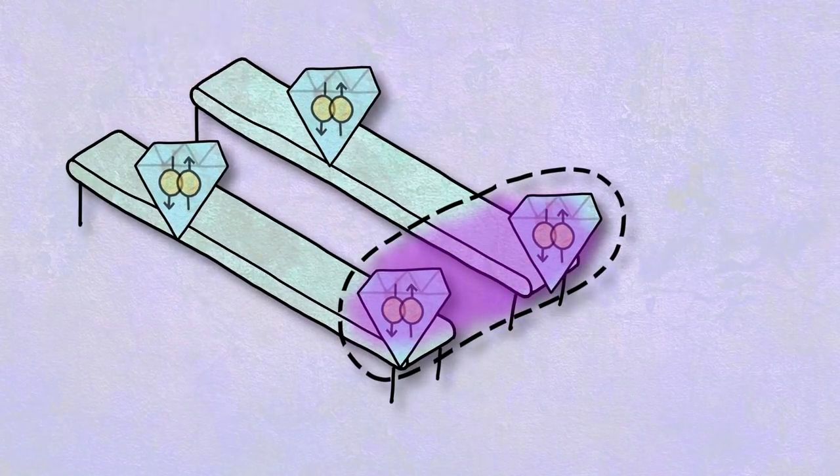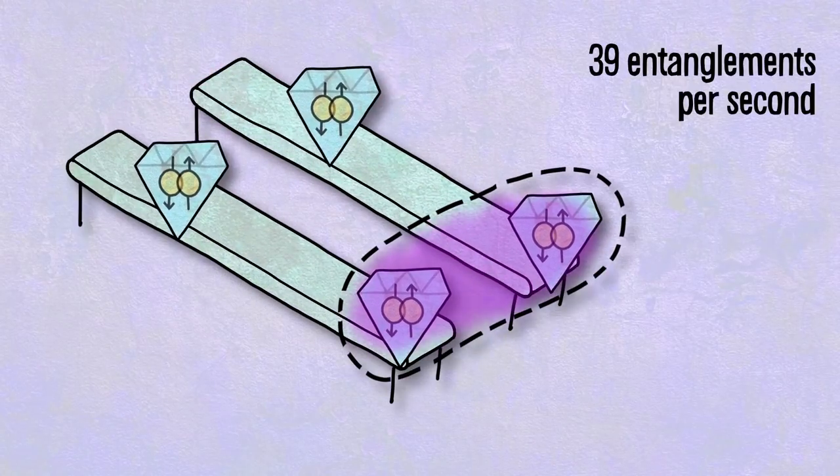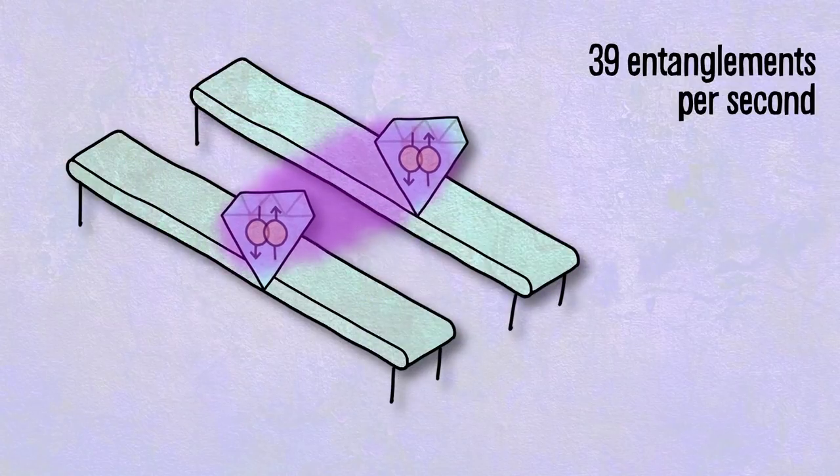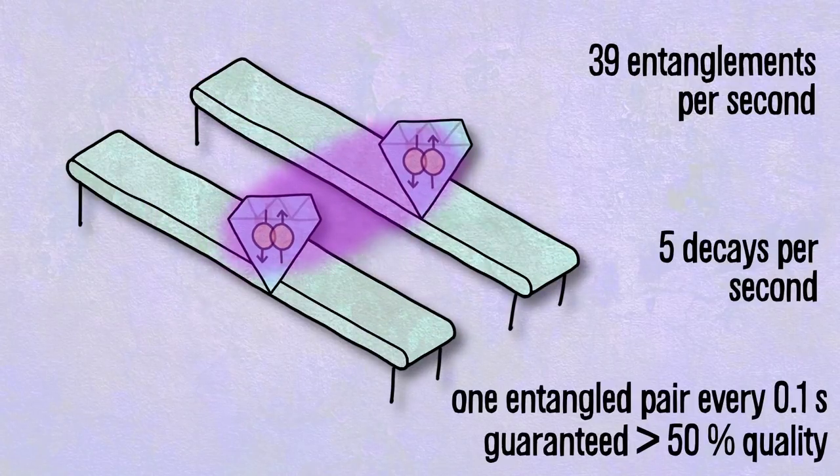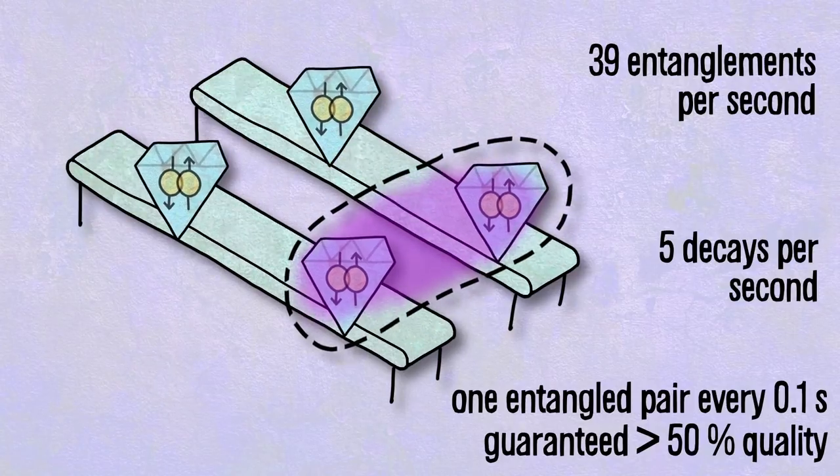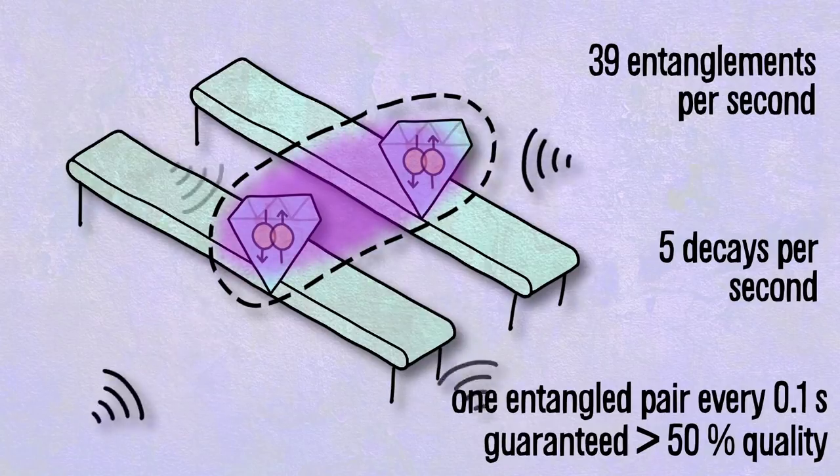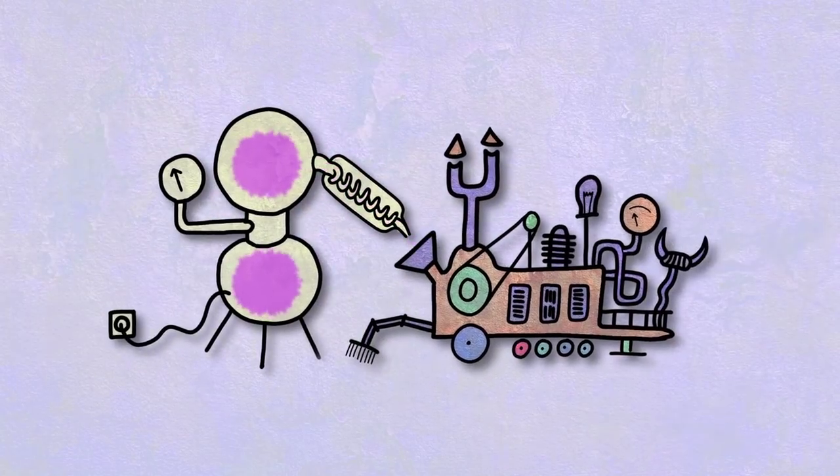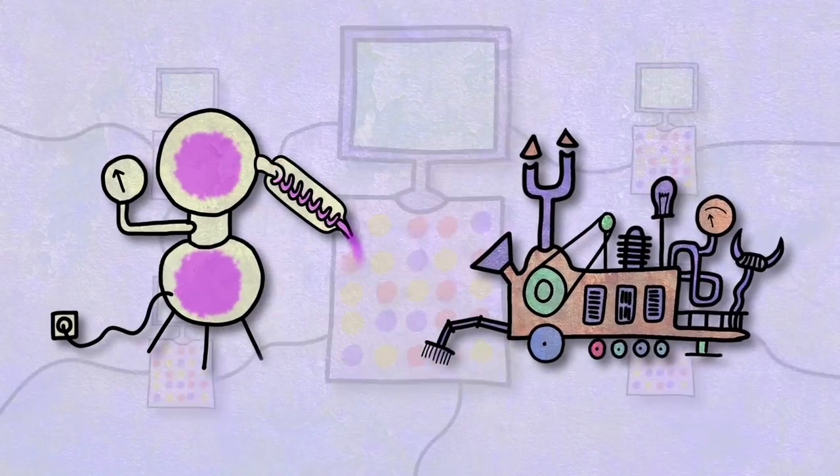Our best setup, after some fiddling, generates 39 entangled pairs per second, which will only decay five times per second. The resulting assembly line produces an entangled state at clockwork timing of ten times a second, with a guaranteed quality over 50%, to produce a reliable supply which could fuel a quantum network. And yes, we're also working on that.